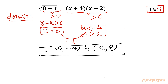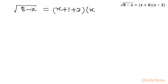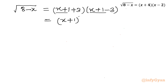Let us get started with our equation. On the right hand side, x plus 4 can be written as (x plus 1 plus 3), and the second bracket as (x plus 1 minus 3). This is of the form (a plus b)(a minus b), so we can write it as a squared minus b squared.